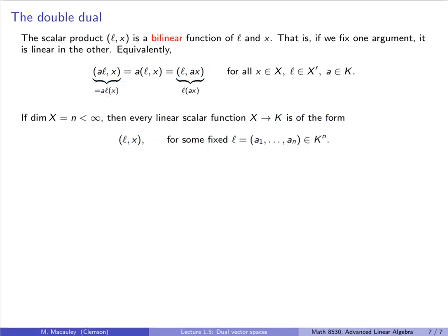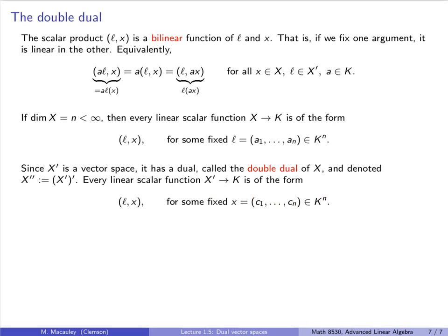Let me now write down what I just wrote up formally. So if X is n-dimensional, then every linear scalar function is of the form ⟨L, X⟩, where L is some n-tuple. And, of course, X' is a vector space. It has a dual. We call it the double dual and write it as X''. So every linear scalar function is also of the form ⟨L, X⟩ for some, now instead of L being fixed here, X is being fixed.